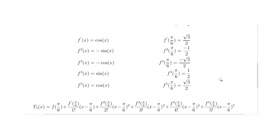Now we can start inputting values into our Taylor polynomial. With n=5, T₅(x) equals f(π/6) as the first term — all the a's are now filled in with π/6. In total there are 11 values of π/6 to fill in. Then the first derivative at π/6 divided by 1 factorial times (x − π/6), plus the second derivative at π/6 over 2 factorial, and so on. It's best to go one step at a time.